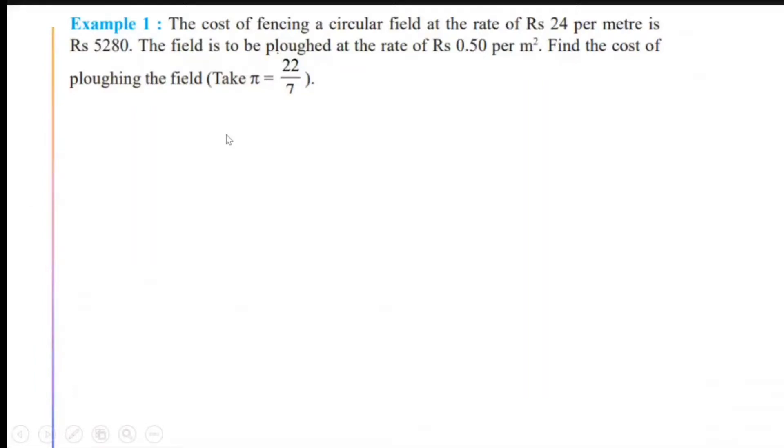That means it is going to be done along the perimeter or the circumference of the circular field. Now, this circular field also, we get a hint when it is written per meter. Rs 24 per meter means I need to find out the circumference.